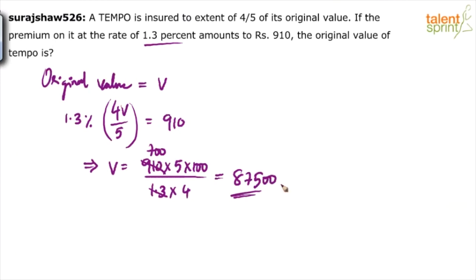Then you can say that the answer is 70,000. Why? See, this is the original value. If he says, what is the insurance amount? I mean, how much is it insured for? So that will be 4/5 of this value. So 4/5 of 87,500, which is equal to 70,000.